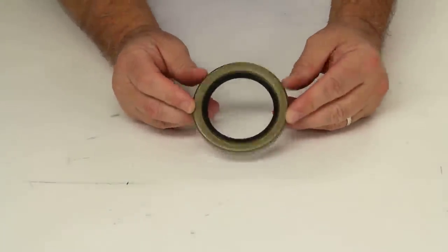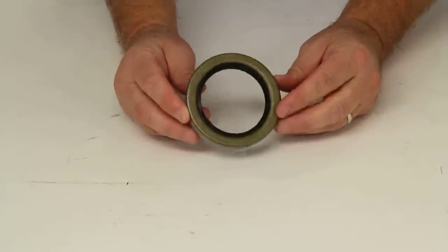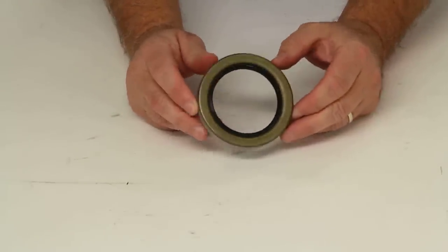Today we're going to review part number 10-48. This is the Redline Trailer Hub oil seal.